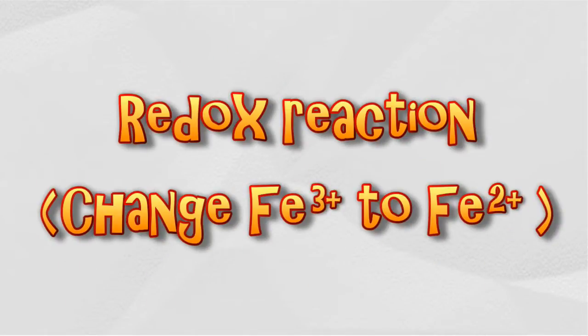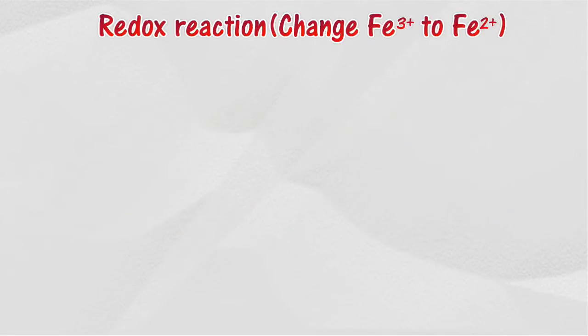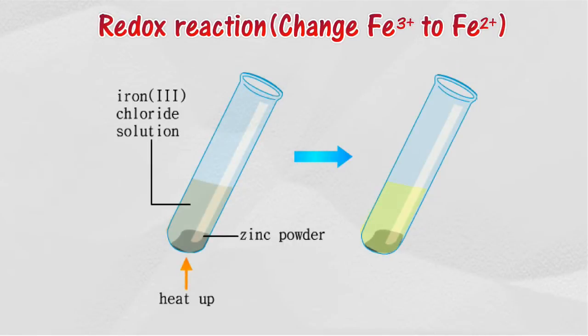Redox reaction involving the change of ferrum 3 ions to ferrum 2 ions. Ferrum forms two types of positive ions, which are ferrum 2 ions and ferrum 3 ions, in the respective compounds.